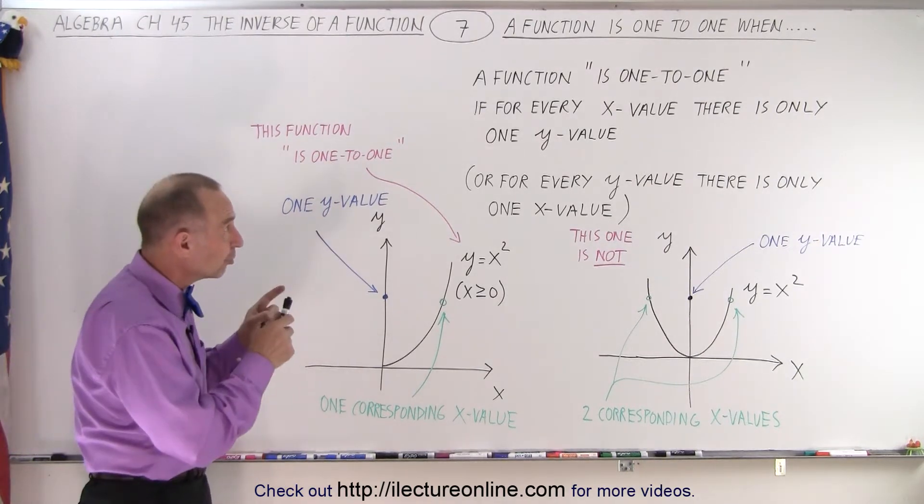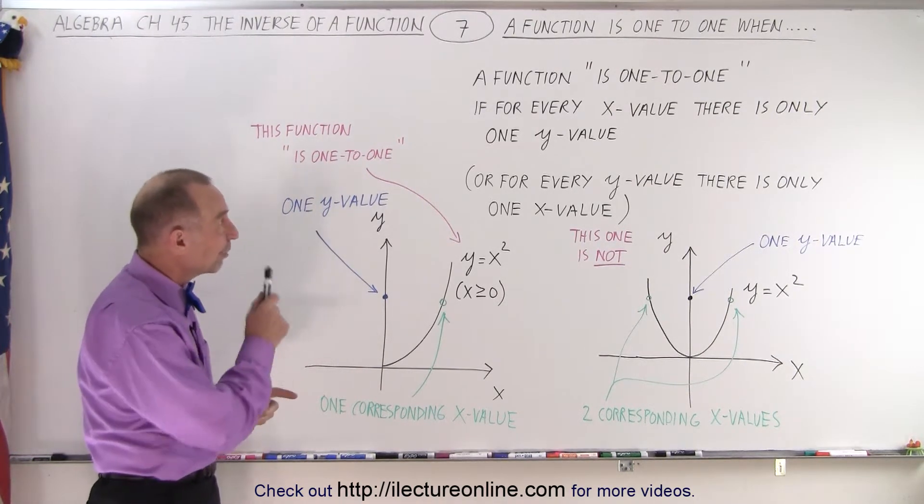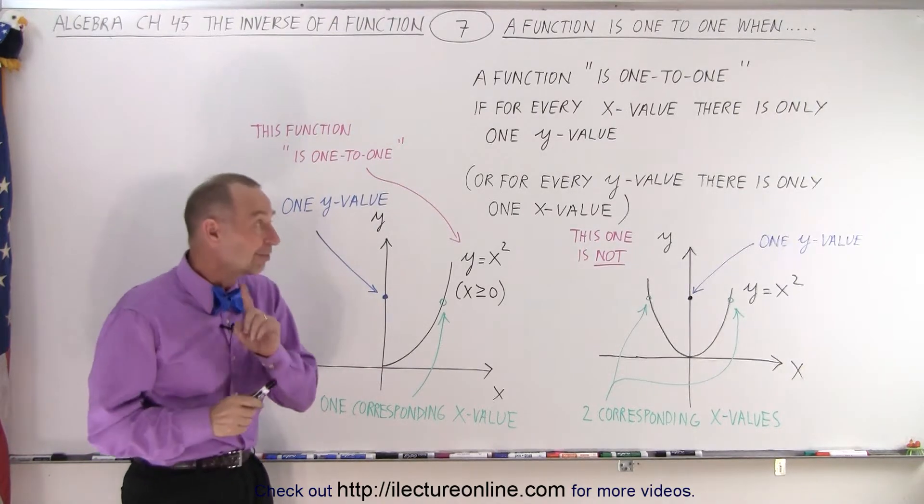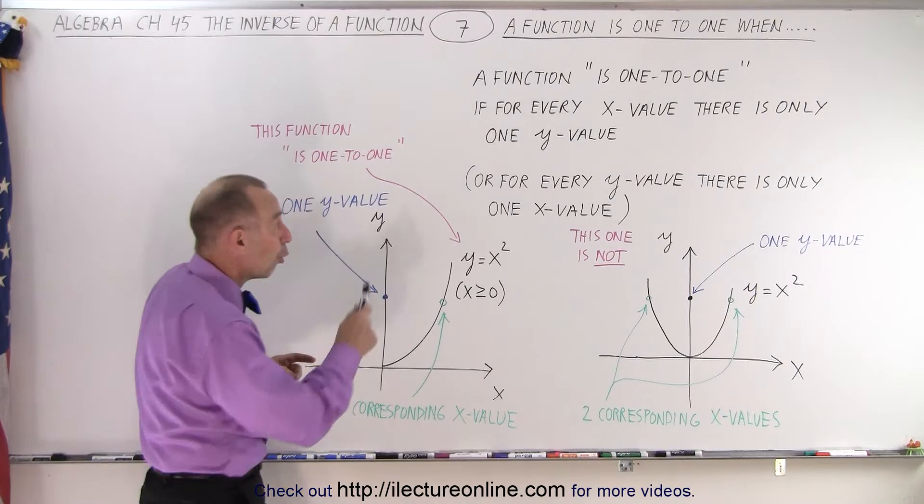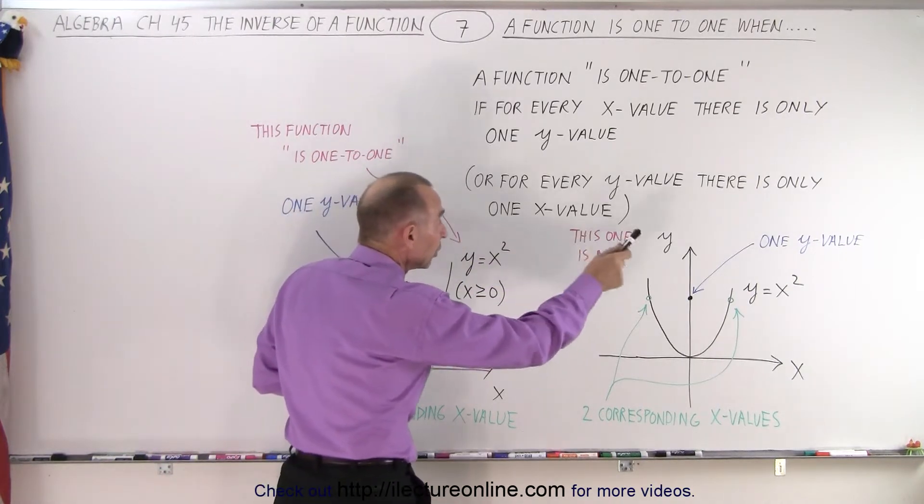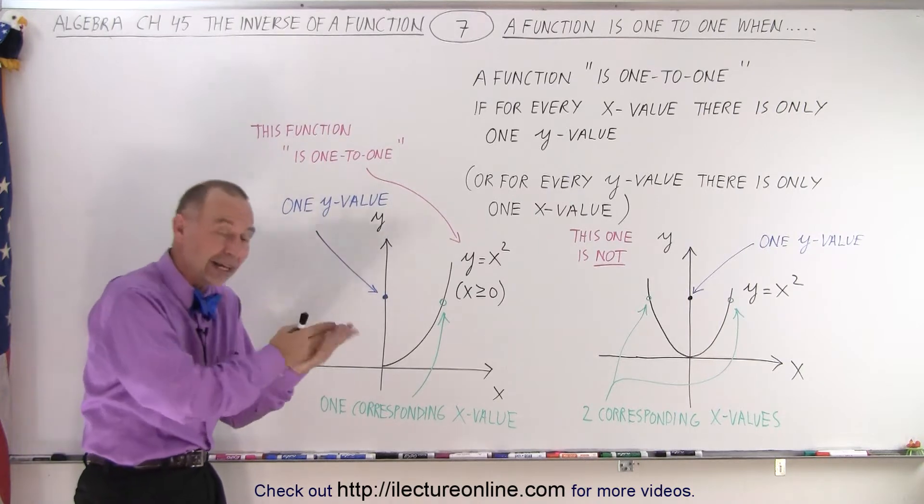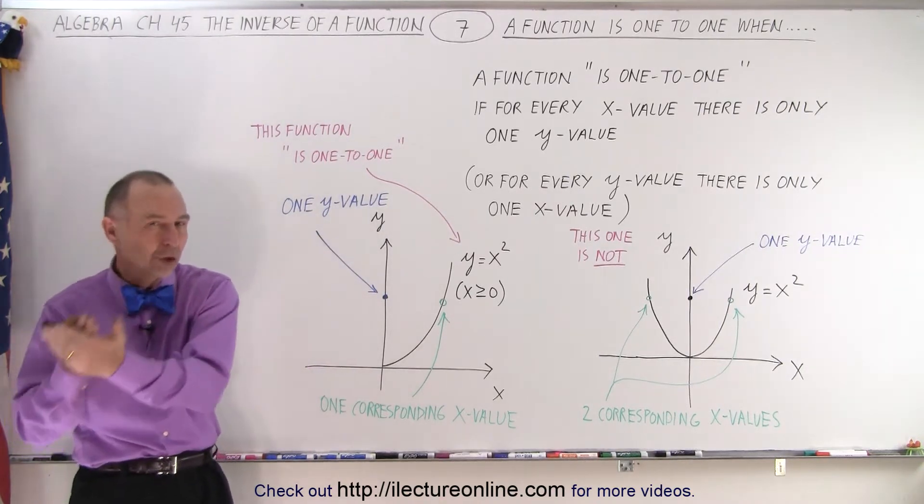So, a function is one-to-one if for every x value there's only one y value. Now, that's important. We can also say, or for every y value there's only one x value, because after all there's a one-to-one correspondence. For every x there's only one y, for every y there's only one x.